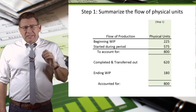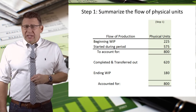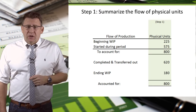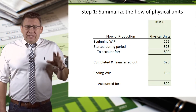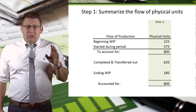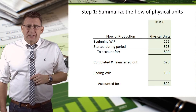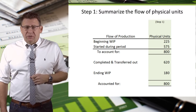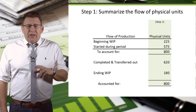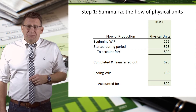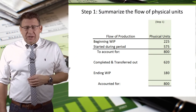The first step is summarizing the physical flow of units. In this example, WIP has 225 partially completed units from the prior period, shown here as beginning inventory. Additionally, 575 units were started during the period, so we need to account for 800 units. There are only two things that can happen to our units: either they were completed and transferred out to the next process, or they remain as partially completed units in ending inventory. Either way, the total needs to be 800, and you can see from here that it is.